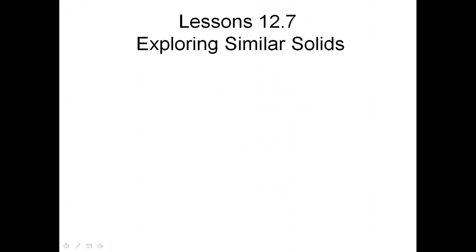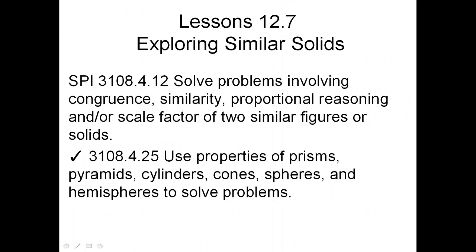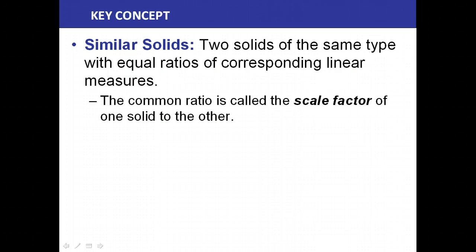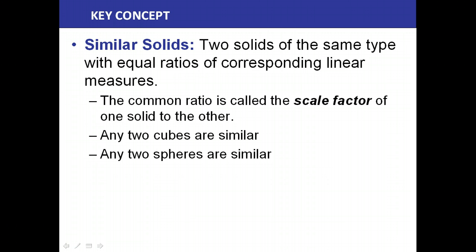Now we're going to look at exploring similar solids. Similar solids are two solids of the same type with equal ratios of their corresponding linear measures, just like similar figures in a plane have equal ratios of corresponding linear measures. The common ratio is called the scale factor of one solid to the other. Any two cubes are similar, any two spheres are similar.